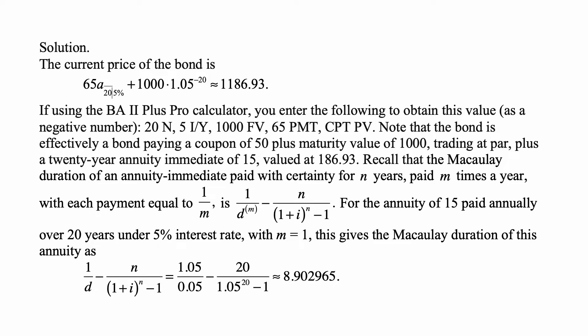We start by calculating the current price of the bond. It is 65 a-angle-20 at 5% plus 1,000 times 1.05 to the negative 20. This is just a basic bond price formula, and that's approximately equal to 1,186.93. Of course, that's more than 1,000 because the bond trades at a premium.